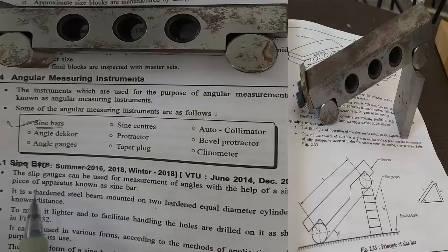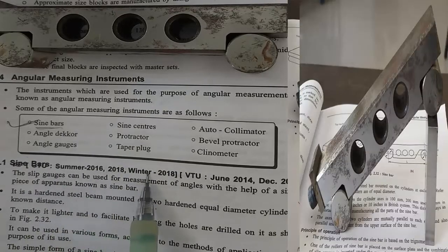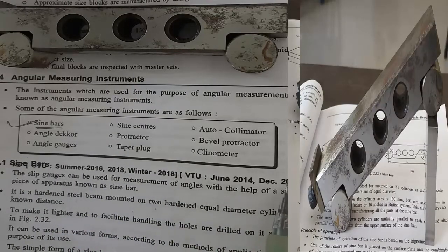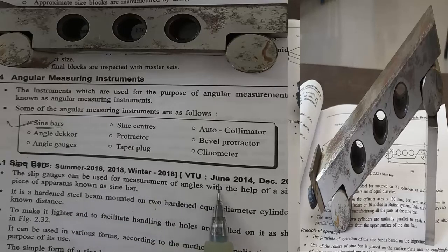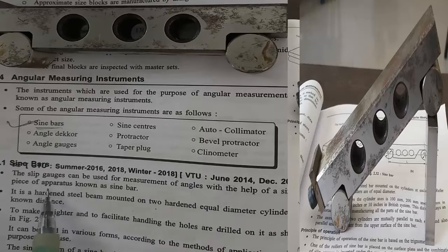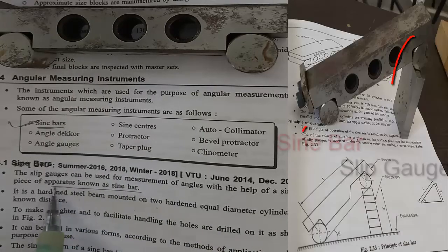This is a very important question. Slip gauges can be used for measurement of angle with the help of a simple piece of apparatus known as a sine bar.